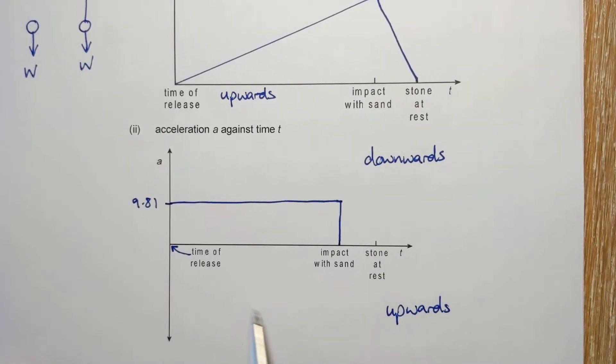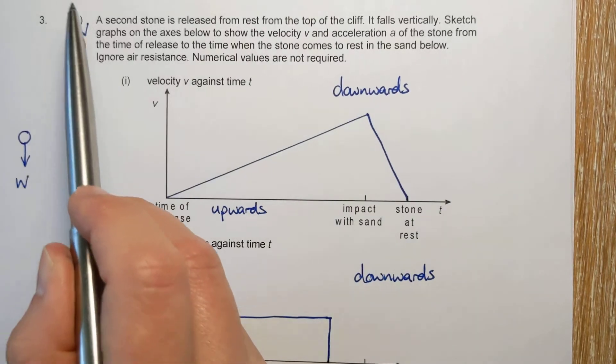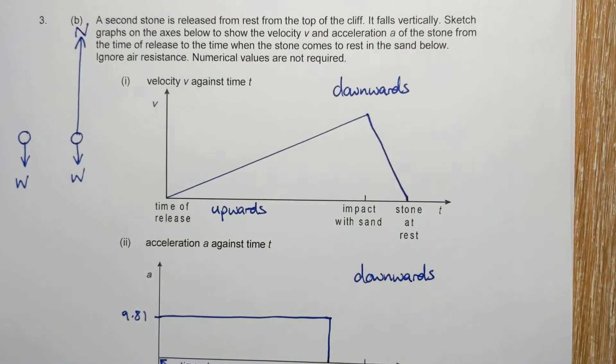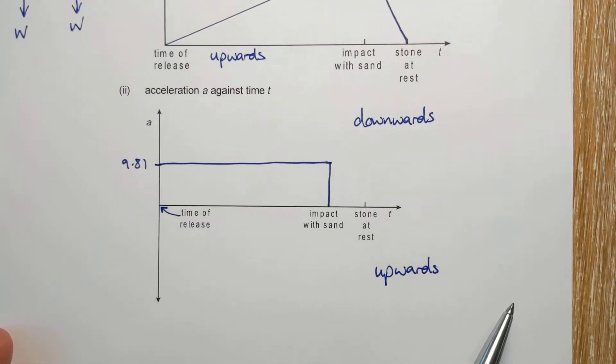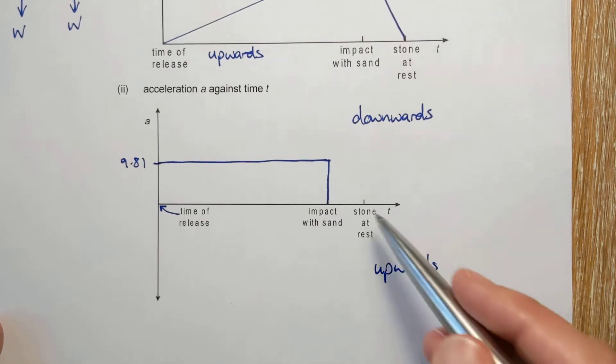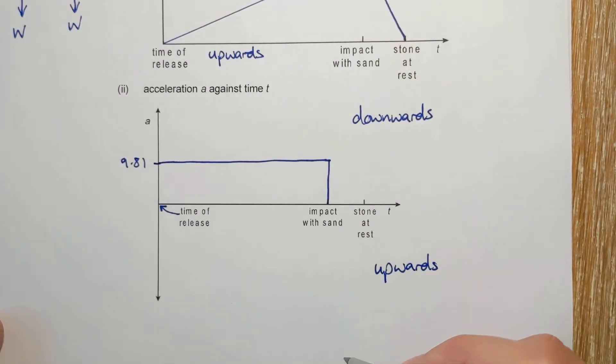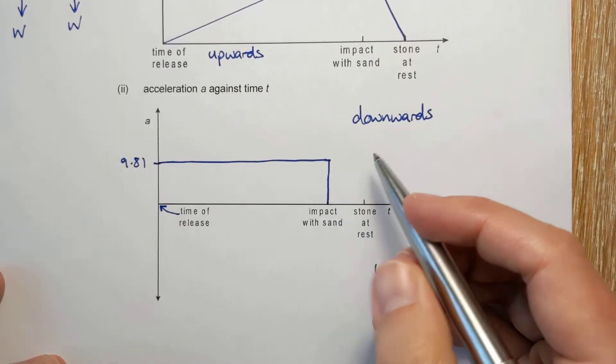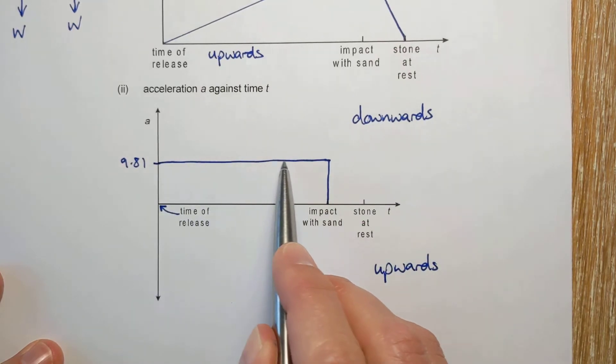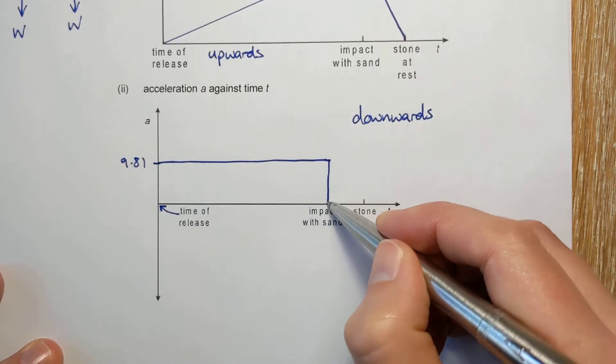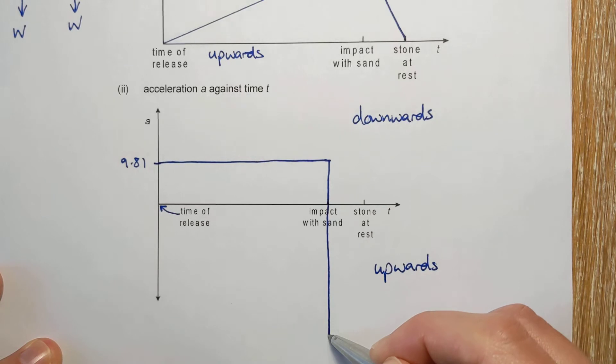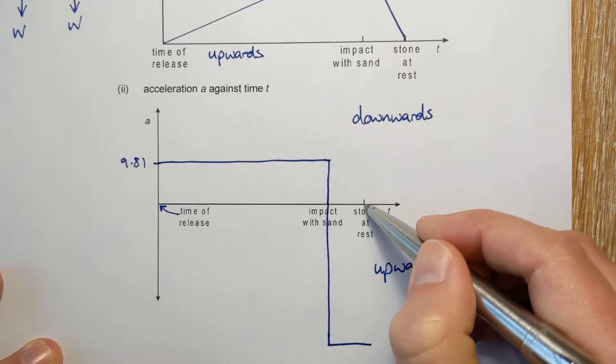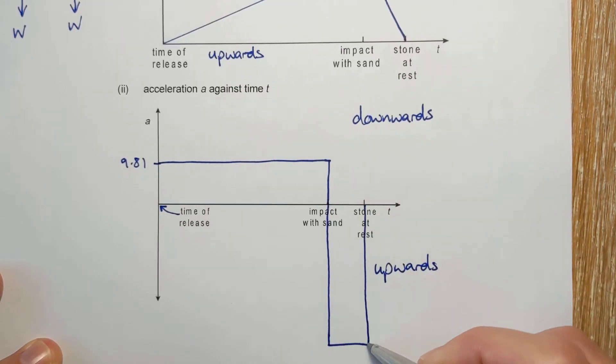And then we said resultant force upwards, and so acceleration upwards. So the acceleration has to be down here now. And again, you don't know what exact shape this is. So as long as you've got something below the axis, you get the mark. So constant positive acceleration until it hits the ground and then negative acceleration until it reaches a standstill.